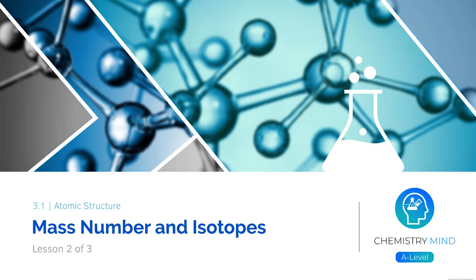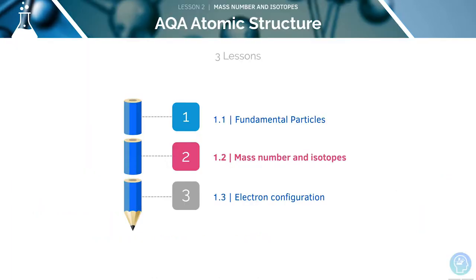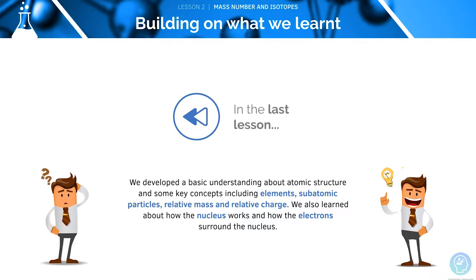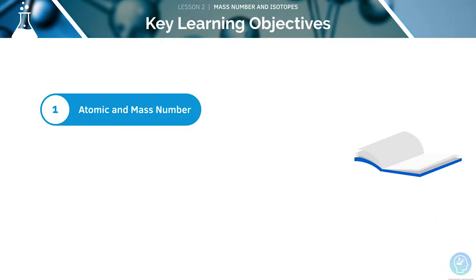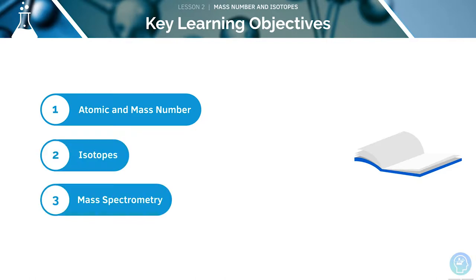Welcome to lesson two of three in this tutorial: mass number and isotopes. Last time, we looked at fundamental particles and the basic structure of an atom. Now, we'll be focusing our attention on mass number and isotopes. Here's a list of key learning objectives: we'll start with atomic and mass number, then move on to defining isotopes, and finally look at the process of mass spectrometry.